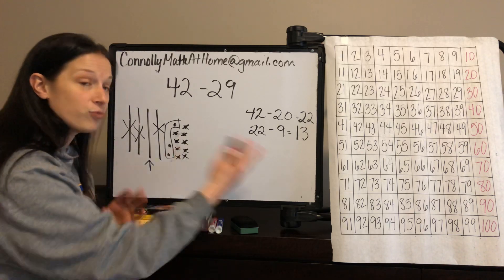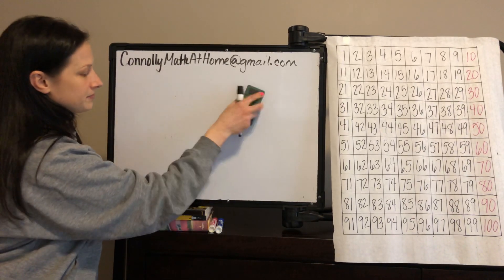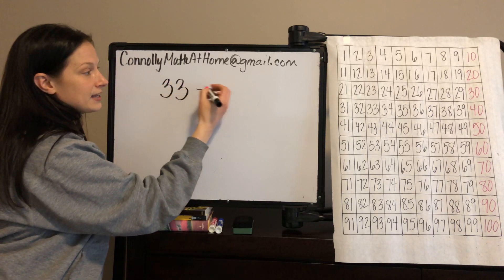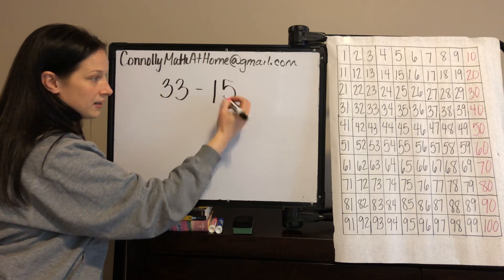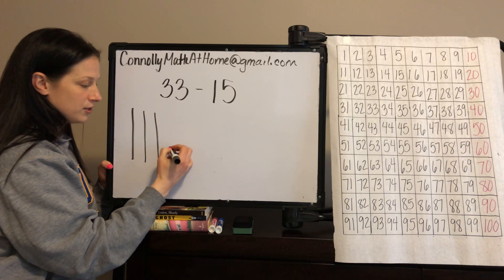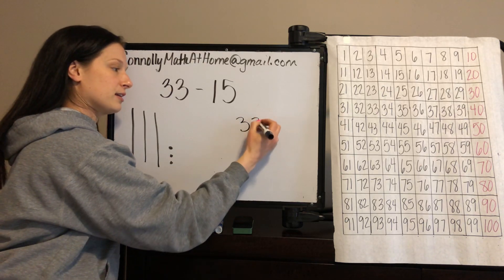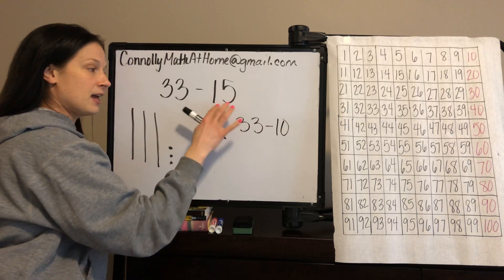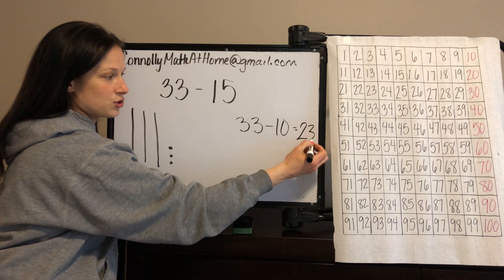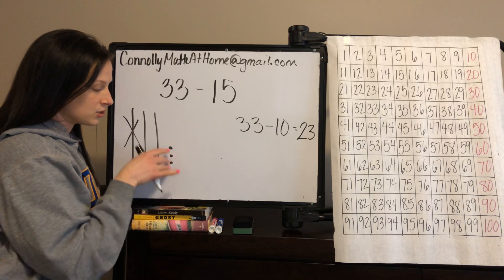Let's do one more example where we have to regroup — it's not called borrowing anymore, parents, hard to remember even when you're teaching it. Let's start with 33 and take away 15. I'll represent 33: 10, 20, 30, 31, 32, 33. I'll start by subtracting the 10: three groups of 10 minus one group of 10 leaves two groups of 10, and those three singles are still there. I get rid of one group of 10 and you can see 23 left over.